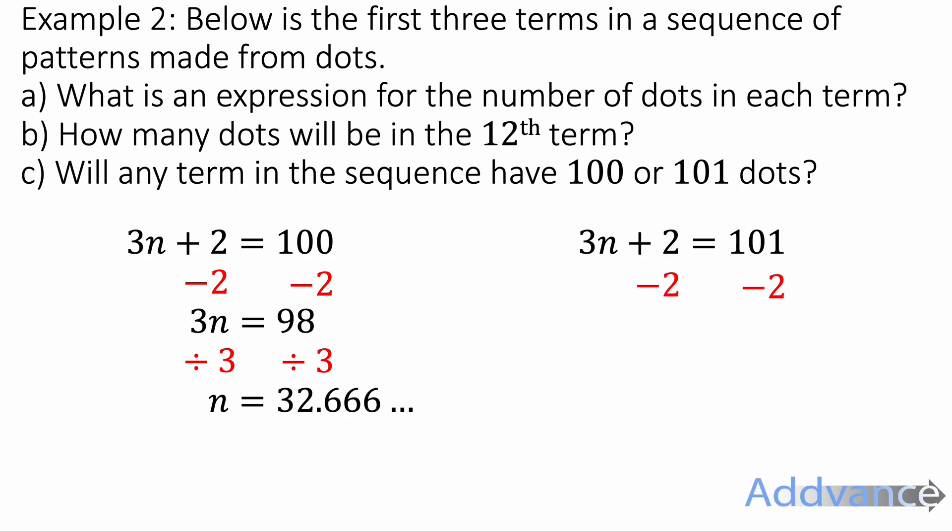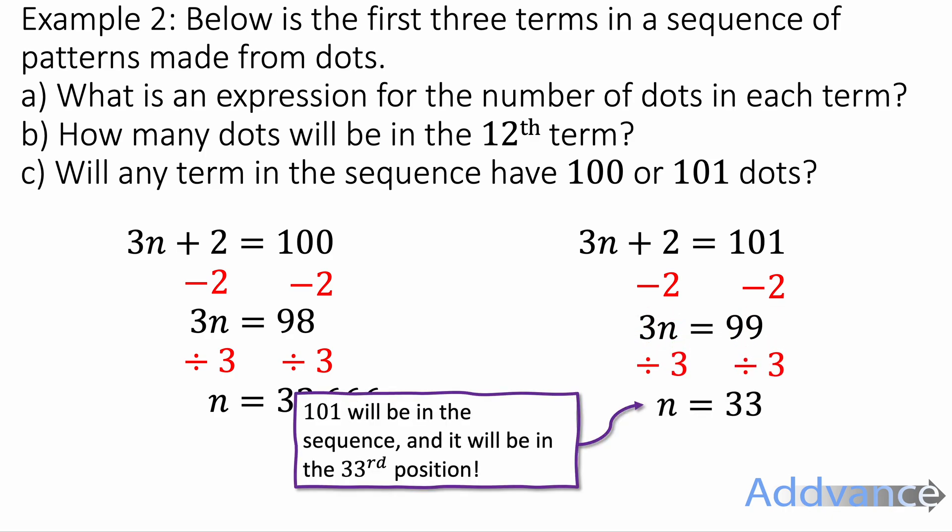Let's try with 101. We're going to subtract 2 from both sides. We get 3n equals 99. Divide by 3, and we get n equals 33. So that is a whole number. And that means 101 will occur in the sequence in the 33rd position, which is indeed correct. So we get 100 is not in the sequence, but 101 is in the sequence.